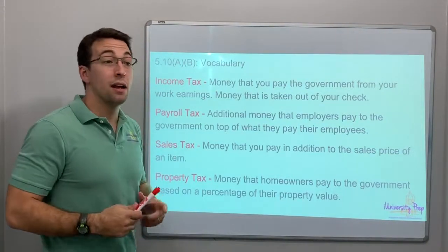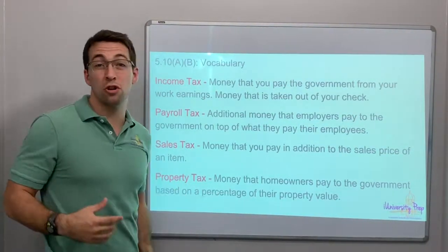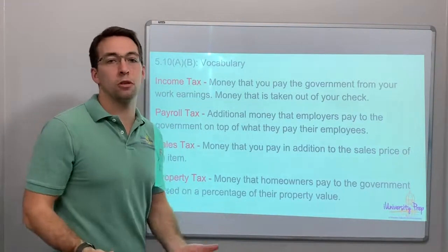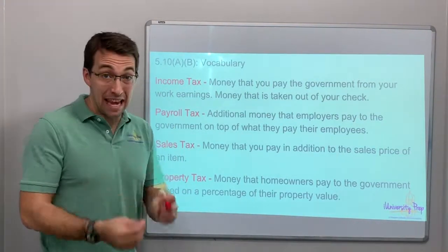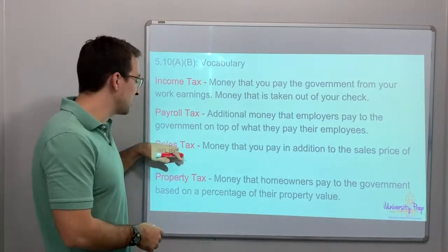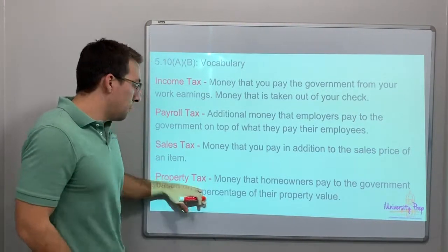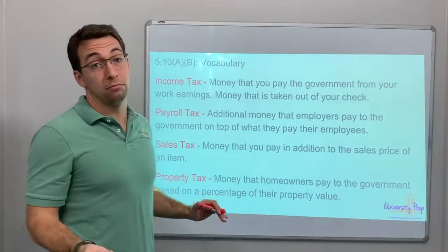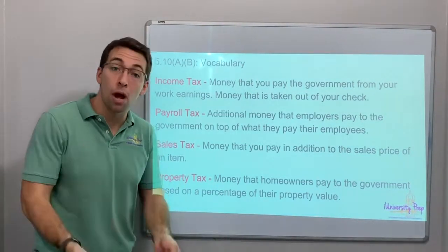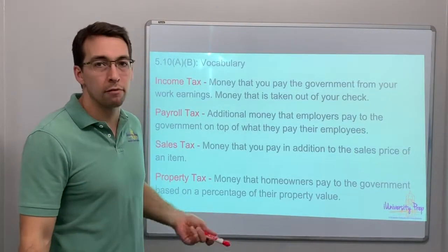Sales tax: when you buy your computer, when you buy your car, when you buy your phone, your new purse, or your sports equipment — anytime you buy a thing, you pay sales tax. Property tax is for the homeowner. If you own a home, if you own land, you pay property tax to the government. And remember, all taxes go to the government.